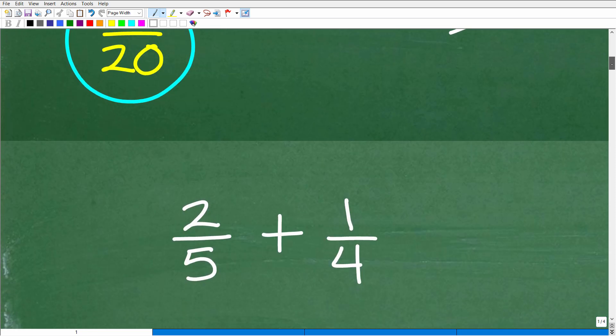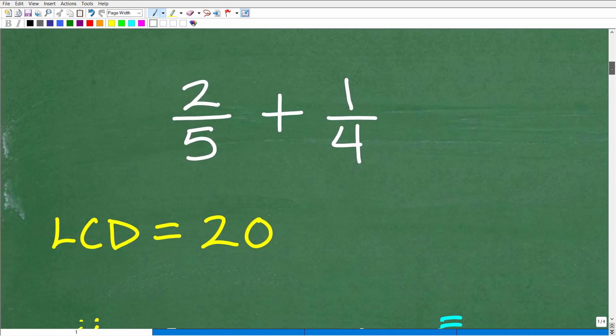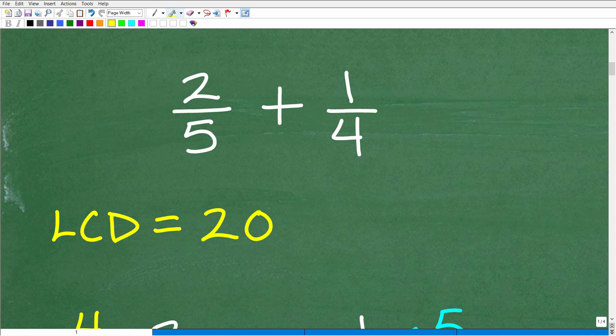Okay, so let's get into this problem. So here we have 2/5 plus 1/4. And when you add or subtract fractions, you can only add or subtract fractions if the denominators, these bottom numbers, are the same. So here they are clearly not the same.